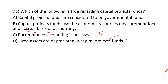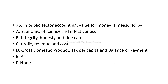In public sector accounting, the value of money is measured by economy, efficiency, and effectiveness. Economy concerns acquiring resources at minimum cost; efficiency is about how much benefit is received from resources used; effectiveness relates to achieving objectives. These three criteria — sometimes called the 3 Es — are the major metrics for value for money in public sector accounting.